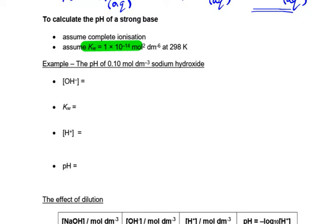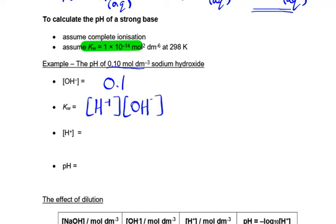Going back to the fact that it fully dissociates, if the concentration of the alkali — sodium hydroxide — is 0.1 mol dm⁻³, then the concentration of the hydroxide ions will also be 0.1 mol dm⁻³. Kw is the hydrogen ion concentration multiplied by the hydroxide ion concentration. Since we know Kw and the hydroxide ion concentration, we just rearrange to get the hydrogen ion concentration.